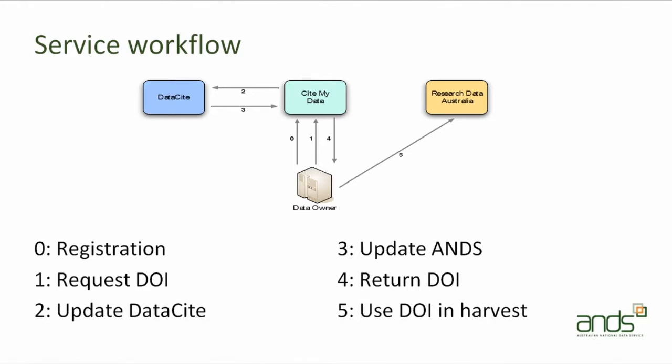This is an extremely high level, abstracted view of what's going on. ANS, even though we provide the CiteMyData service, is effectively a front end or a proxy for the international DataCite infrastructure shown in the blue box. We're also doing it in such a way that future interactions you have with Research Data Australia take your DOIs into account. It's a simple request and response type machine to machine service only at the moment, and once you've got that, you're expected to maintain that link to the DOI so it can be used in future harvests.